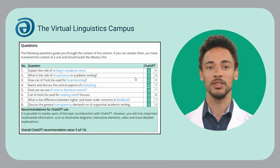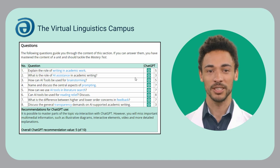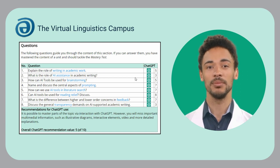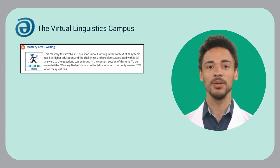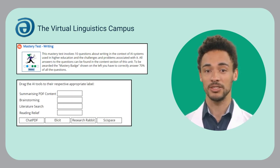My recommendation: use the question sheet of the 'How to Proceed' section for guidance. If you can answer the questions, great. If not, use the blue hyperlinks or simply click on the ChatGPT symbol for help. The mastery test of this unit involves 10 questions about writing in the context of AI systems.